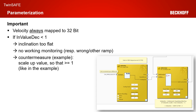Respectively, the wrong ramp is monitored. As a countermeasure, as shown in our tutorial today, you can scale up the value so that the decrement value is greater or equal to one. In our example, we initially wanted to scale to 360 degrees per second but the decrement resulted in a value less than one. So we scaled up to 3600 degrees per second, which results in a decrement value of two, giving us the correct ramp function for our application.